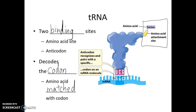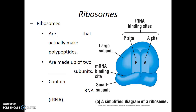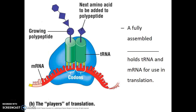Let's look at how the ribosome interacts with these two types of RNA. Ribosomes are the organelles that actually make polypeptides. There are two protein subunits, and also the ribosomal RNA. When we look at the assembled ribosome, there's a place for the mRNA to be held, a place for tRNAs to arrive bringing with them their amino acids, and ribosomal RNA is found within the structure itself. Here we see a fully assembled ribosome, which is holding tRNA and mRNA as well.